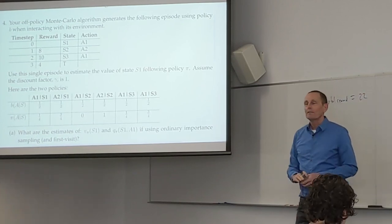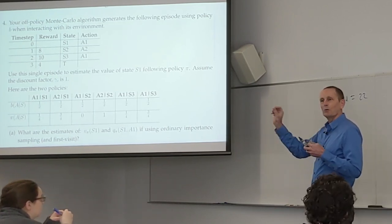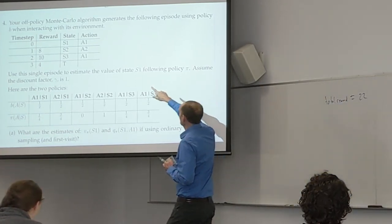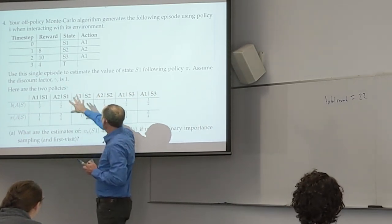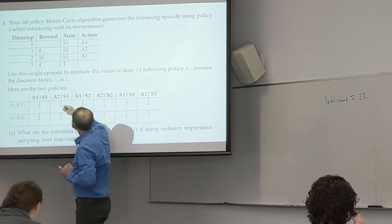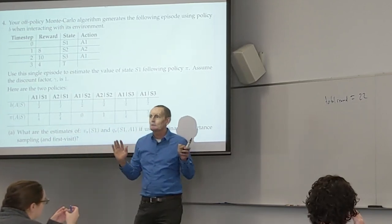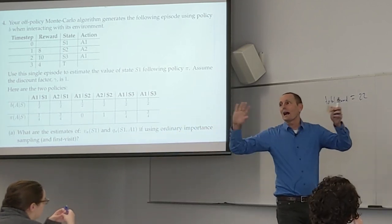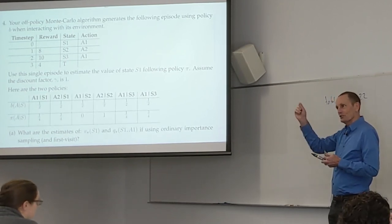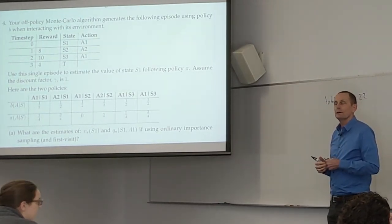When using importance sampling, we don't break up the rewards — this is probably the key problem people had. People were saying: take the 8 reward and look at the ratio for A1 given S1 between pi and B, multiply by that reward, then use the next A2S2 ratio and multiply by 10, and so on. That's not how we do it. In Monte Carlo, we look at the entire reward and then multiply it by the probability of that trajectory happening under the two different policies.